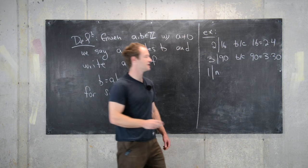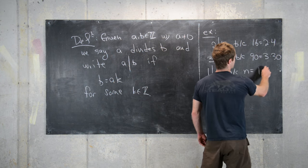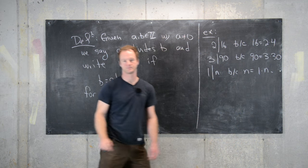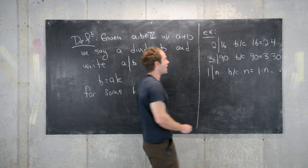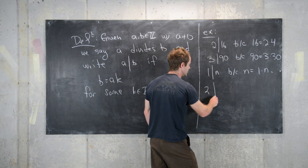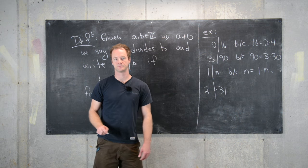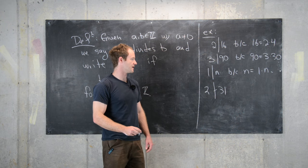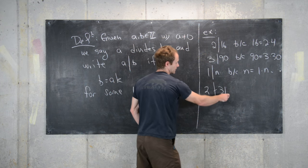Maybe a non-example: we could say 2 does not divide 31 because there's no integer where we can write 31 as a multiple of 2, and so on and so forth.